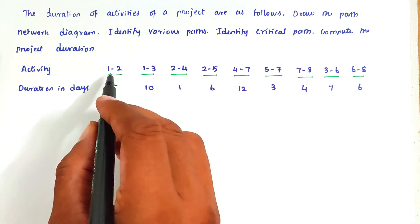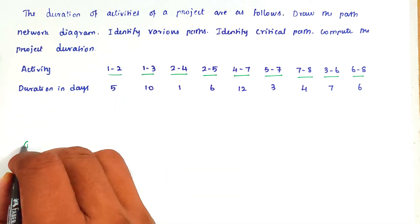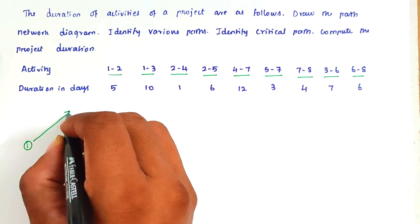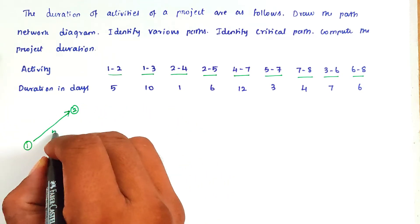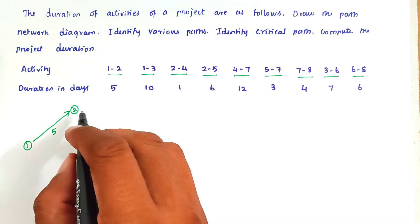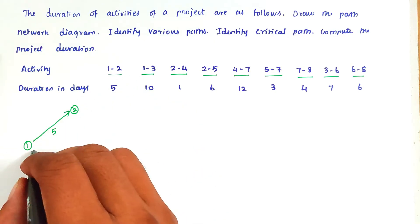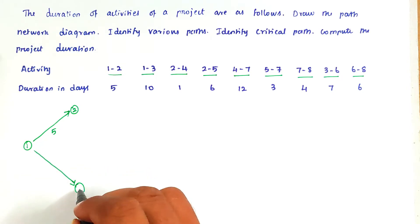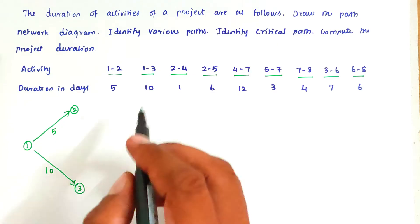So now we can draw activity 1 to 2. The duration of 1-2 is 5. Next, activity 1-2-3 — so we can draw 1 to 3 over here. The duration of 1-3 is 10.